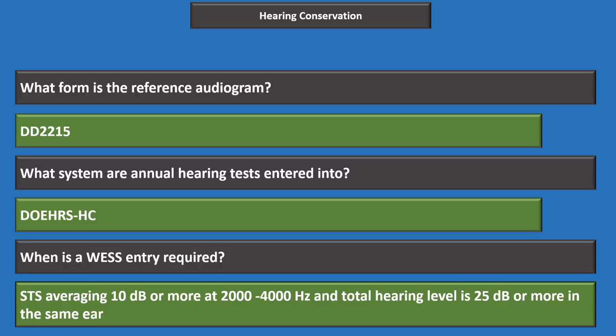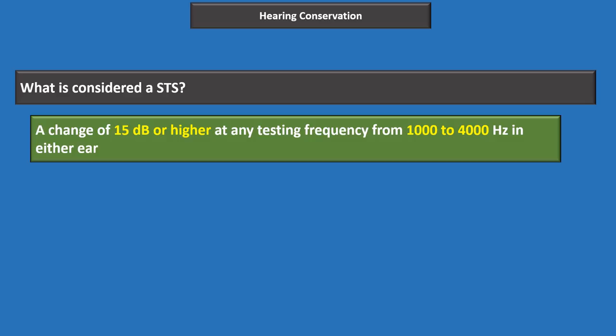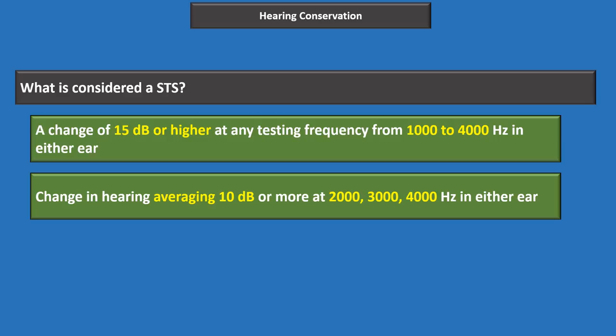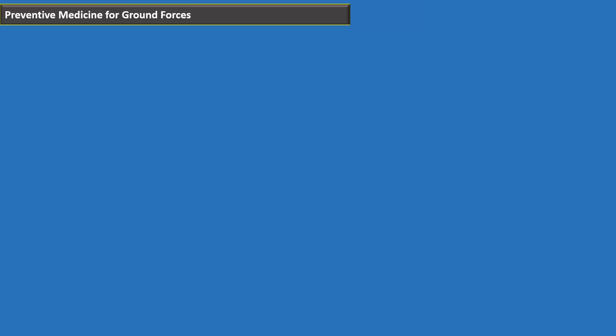A significant threshold shift (STS) is defined as either a change of 15 decibels or higher at any testing frequency from 1,000 to 4,000 Hz, or a change in hearing averaging 10 decibels or more at 2,000, 3,000, and 4,000 Hz. If an STS is found on an annual audiogram, the service member must be excluded from noise hazards for at least 14 hours before retesting. Audiometric chambers must be recalibrated at least annually.